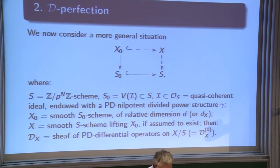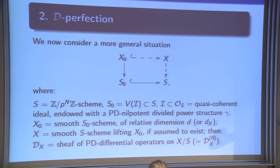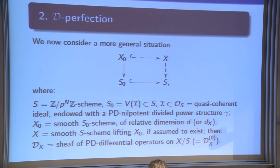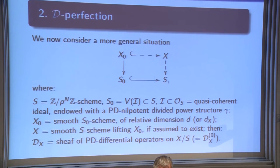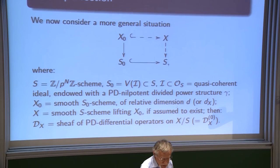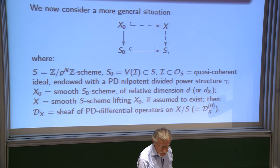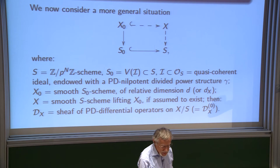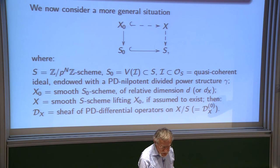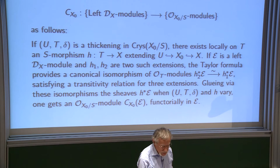Let me define D-perfection. I consider a more general situation than in the introduction: S_0 → S is a PD immersion defined by a PD nilpotent ideal, S is annihilated by p^n, and X_0 is a smooth S_0-scheme of relative dimension d_X. Sometimes I assume X_0 is liftable, in which case I denote by X the lifting of X_0. D_X will be the sheaf of PD differential operators over X throughout the talk.